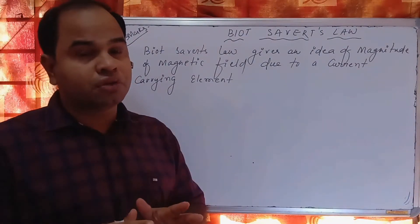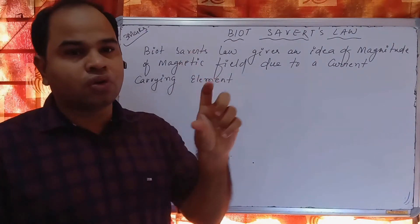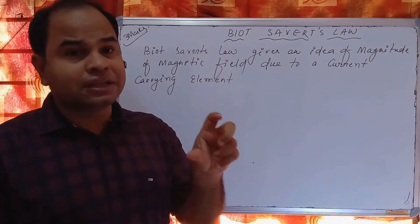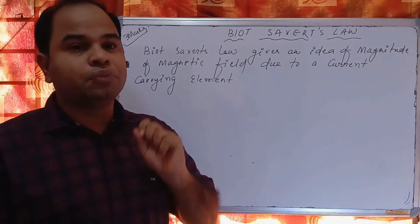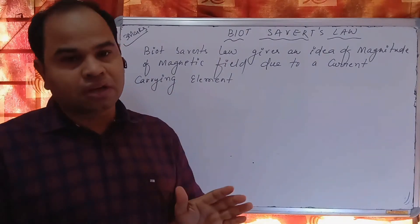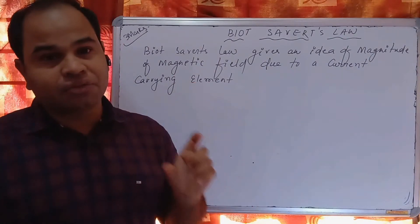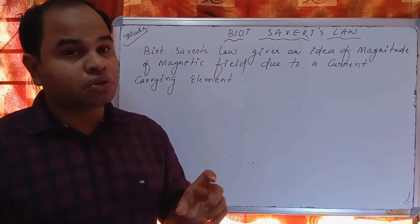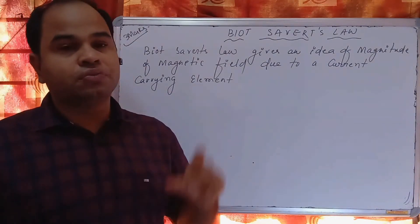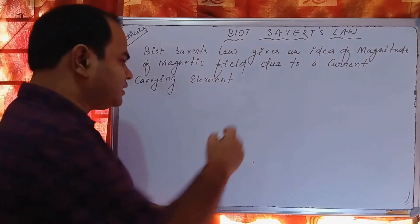The small magnitude of magnetic field produced by a small element of the current-carrying conductor. Biot-Savart's law gives the formula for the small magnetic field — the magnitude of the small magnetic field produced by a current-carrying element.